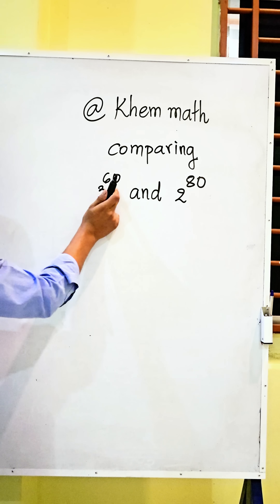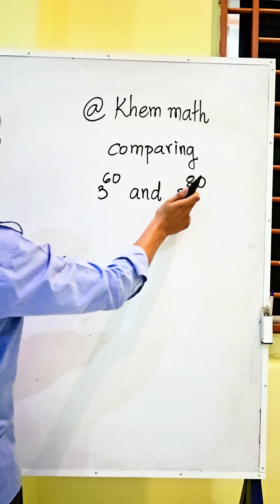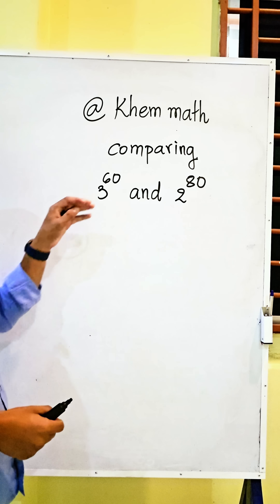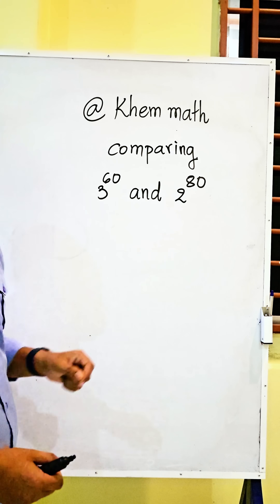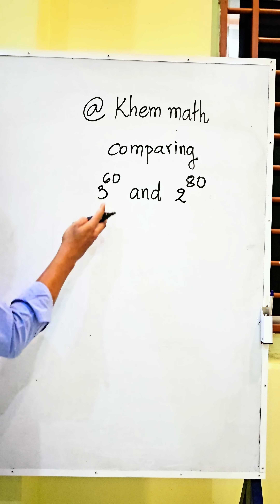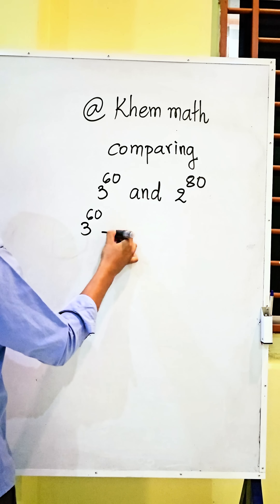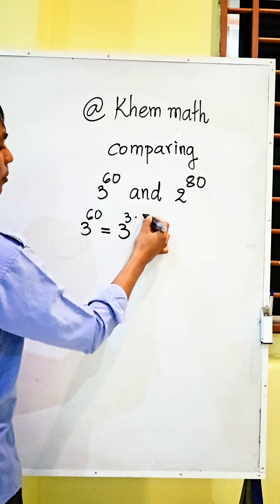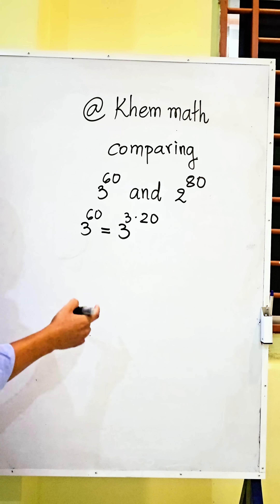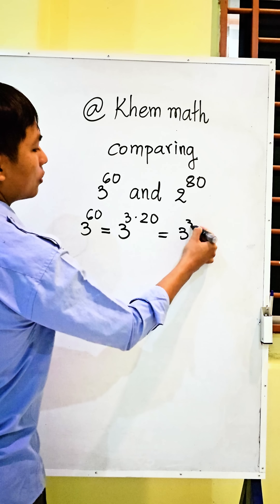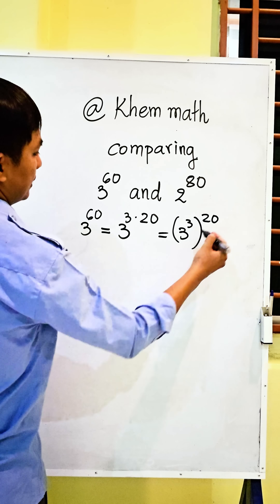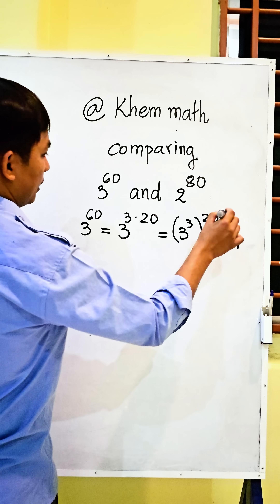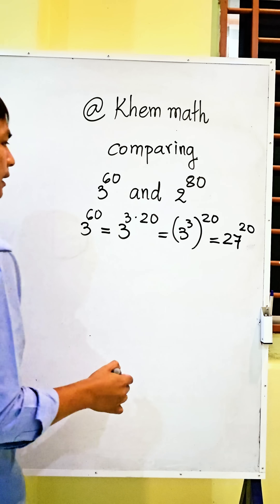Comparing 3 power 60 and 2 power 80. To compare these, we must rewrite them with the same base. So here, 3 power 60 equals 3 power 3 times 20, which equals 3 power 3, all to the power 20. And 3 power 3 equals 27, so this becomes 27 power 20.